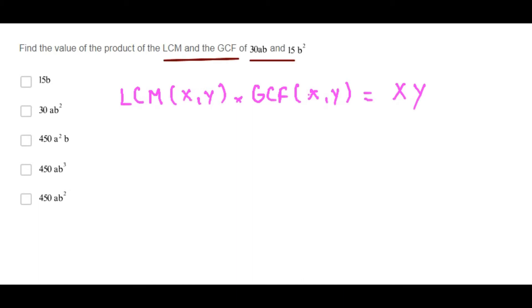Therefore, the product of the least common multiple and the greatest common factor of these two numbers must be equal to the product. Finally, we have 450 times a times b cubed. Choice D is correct.